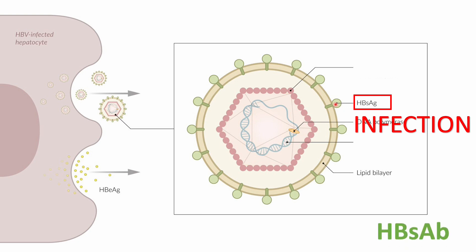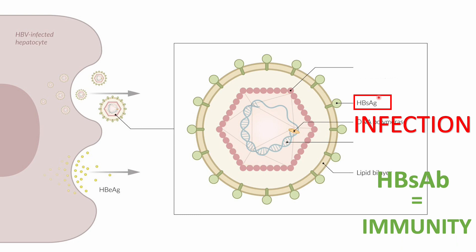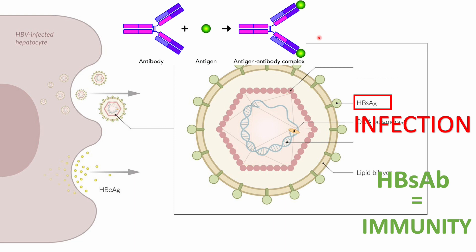Hepatitis B surface antibody is the immune response to the surface antigen. No antigen and antibody can exist together at the same time — it's either one or the other. Having the surface antibody means you have immunity, because the antibody gets rid of the antigen. This immunity may be acquired either from the vaccine or from a previous infection.